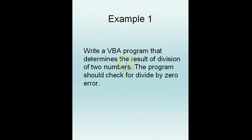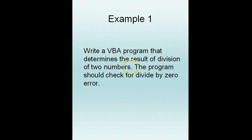Another example is computing the result of division of two numbers. We take two numbers and divide one by the other. But we know that if we divide anything by zero, we'll get an error or an infinity value. So the program should check for a divide-by-zero error.